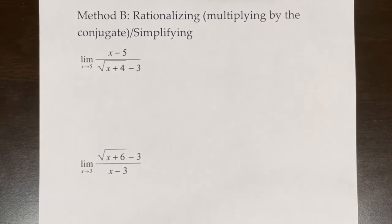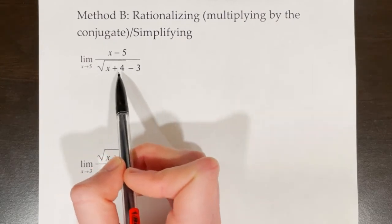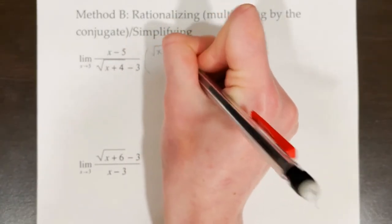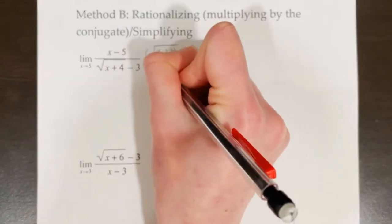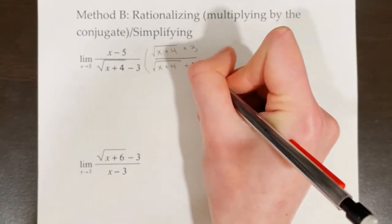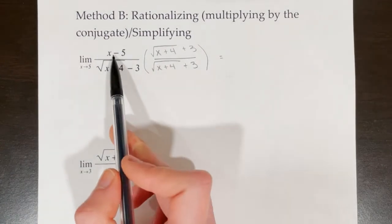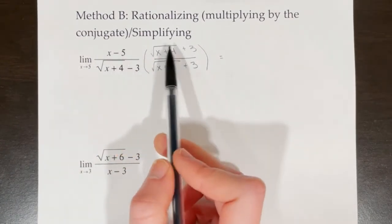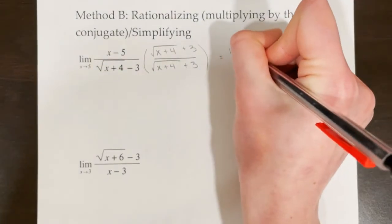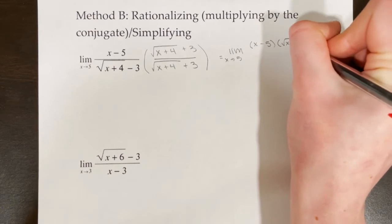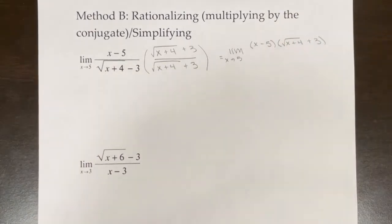Another method when we get indeterminate form is rationalizing, also known as multiplying by the conjugate. In this example, the conjugate will be the square root of x plus 4 plus 3, and we multiply both the numerator and denominator by it. When multiplying by a conjugate, keep the factors on top in factored form — there's no need to foil or distribute in the numerator. It stays as the limit as x approaches 5 of x minus 5 times the square root of x plus 4 plus 3.